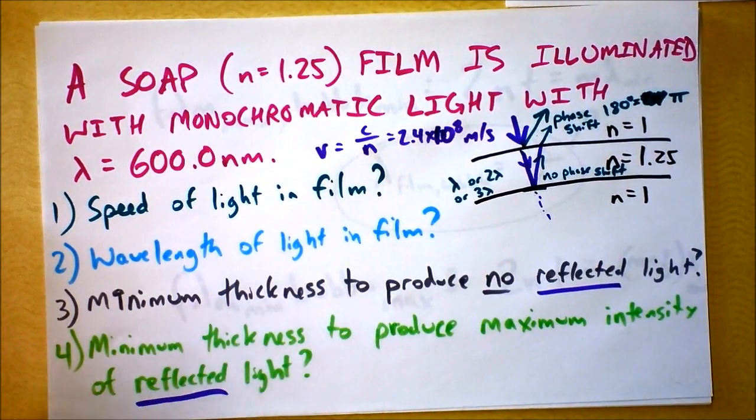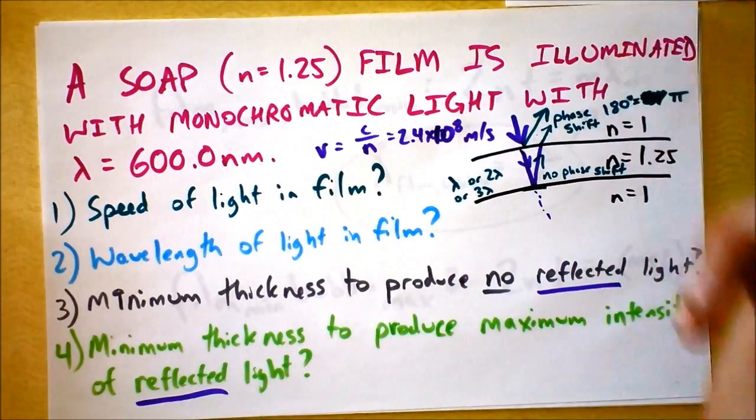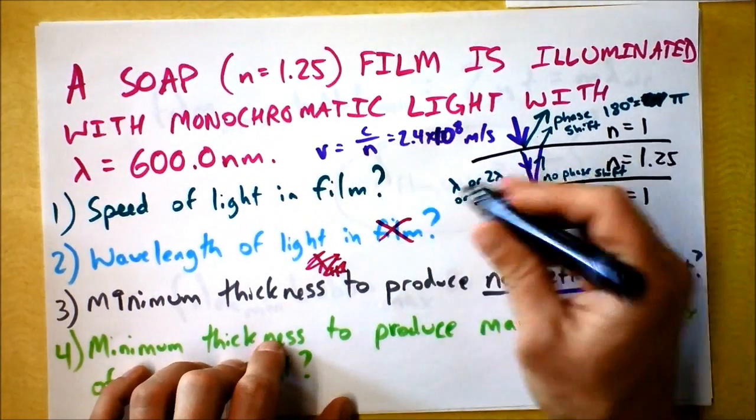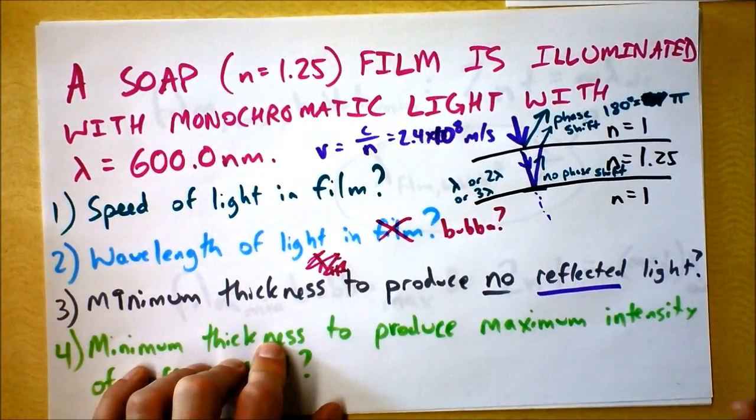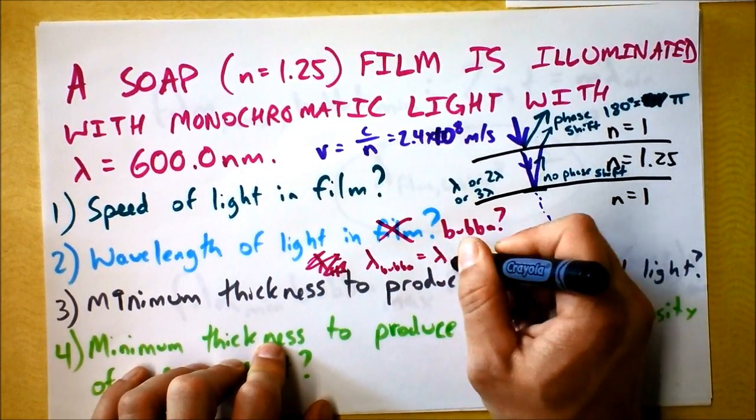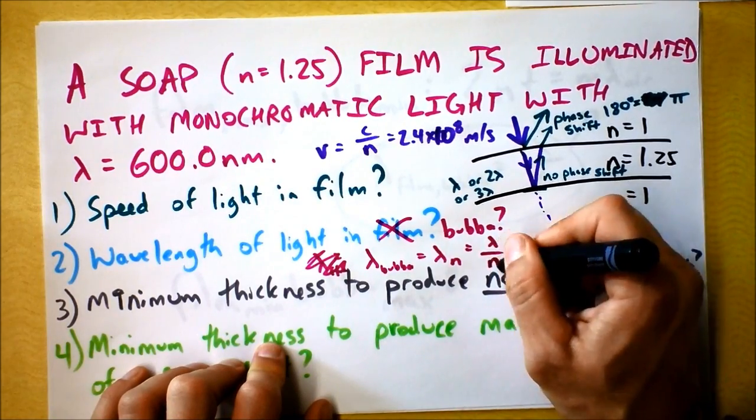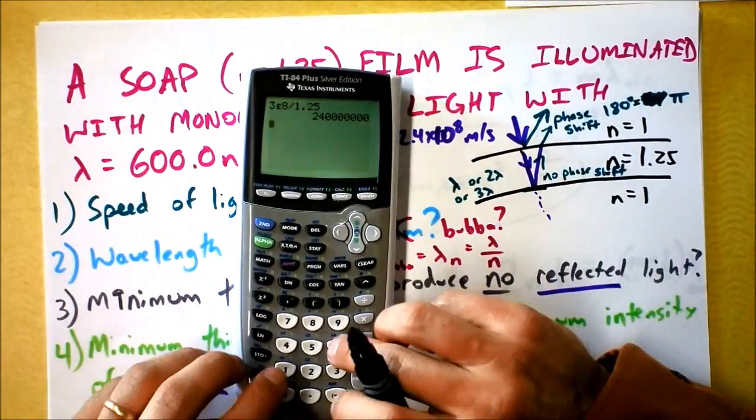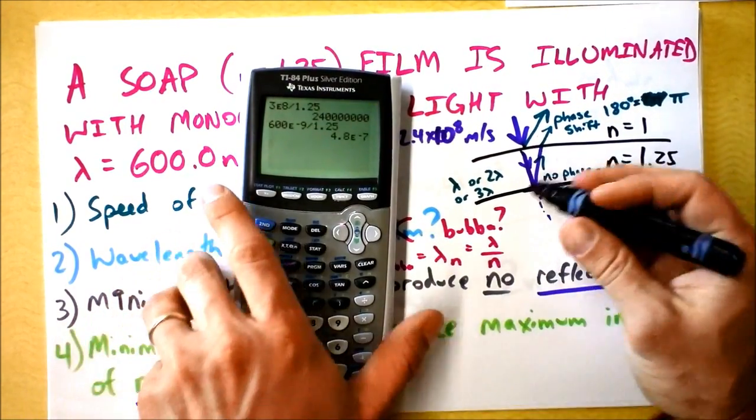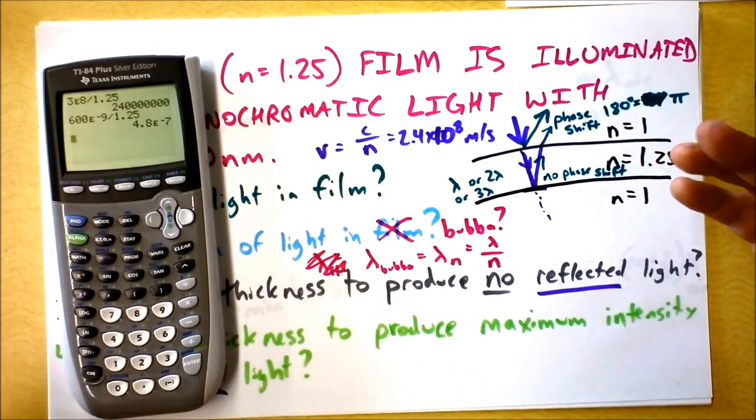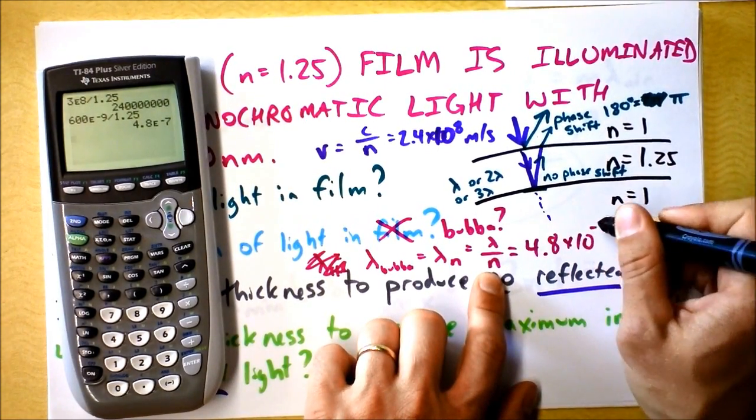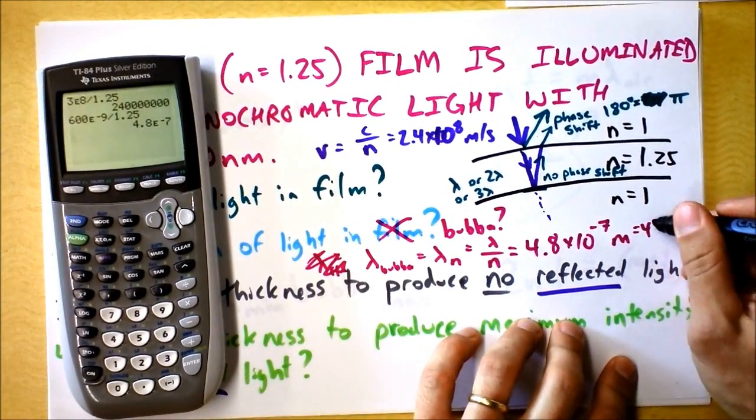Wavelength of light in the film. The wavelength of light in the bubble is wavelength in bubble equals normal wavelength divided by the index of refraction. So they're giving us 600 nanometers, and I'm going to divide that by 1.25. So I found a slightly shorter wave, 4.8×10^-7 meters, which is 480 nanometers.